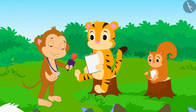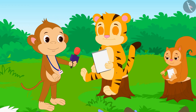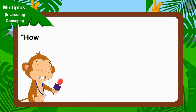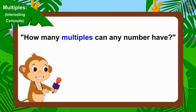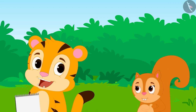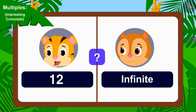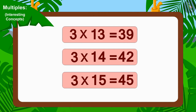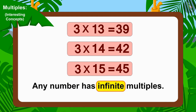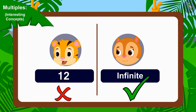Let's see what the next question of the competition is. Babban asked: how many multiples can any number have? Sheer Khan immediately replied 12, and Chanda answered: infinite. Children, can you tell whose answer is correct? We can multiply any number with infinitely many numbers, so any number has infinite multiples. This means Chanda's answer is correct.